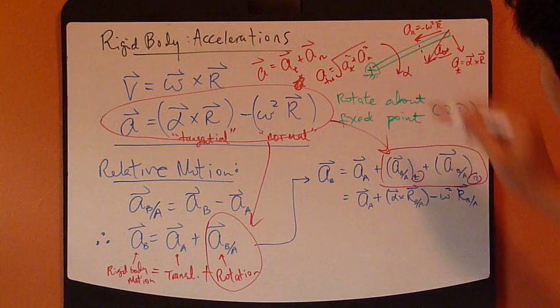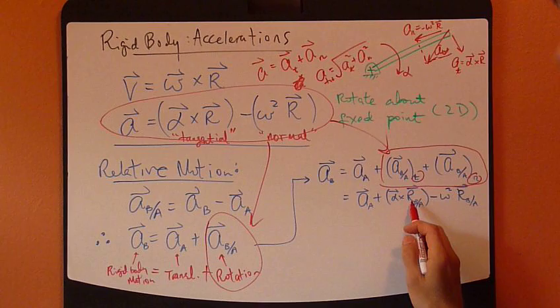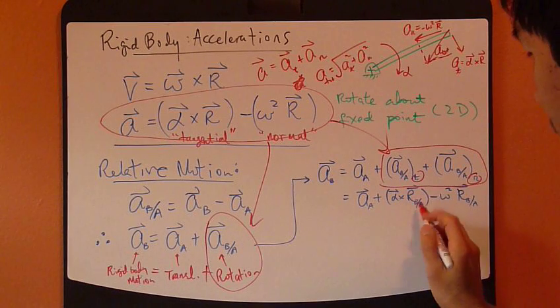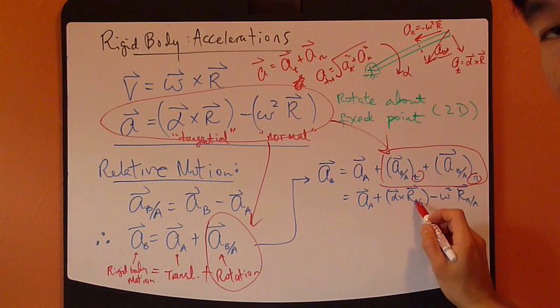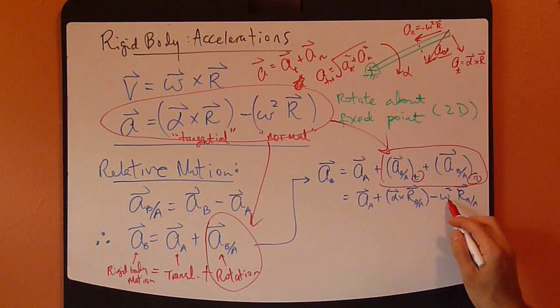This is exactly alpha cross R, and R is again the relative displacement. And then the second term, the normal component.